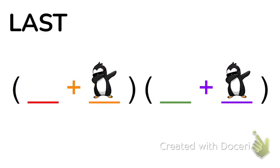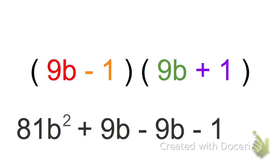And then L stands for last. We're going to multiply the last terms in both sets of parentheses. And so that's negative 1 times positive 1 gives us negative 1.